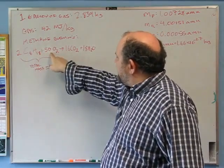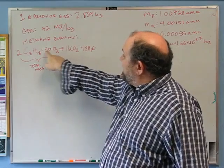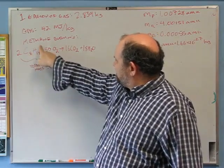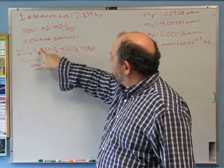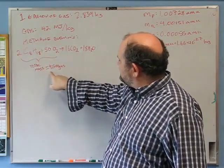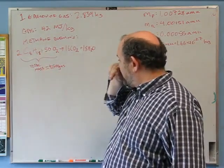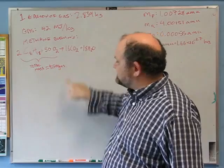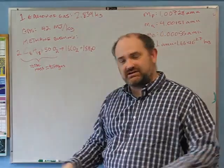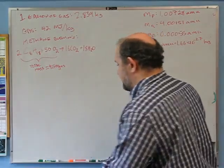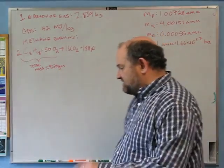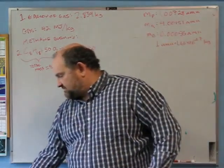So the total mass of the reactants — your gasoline plus oxygen — is 4.5 times the mass of the gas, if you want to do the efficiency calculation. Having cleaned that up from the last problem...